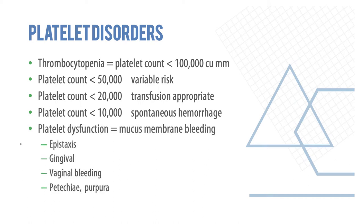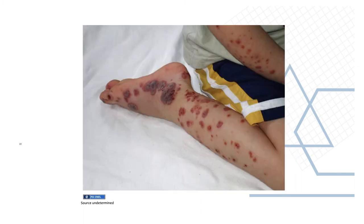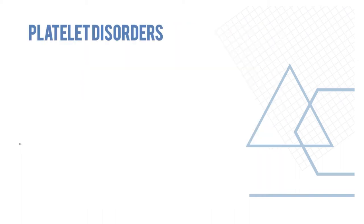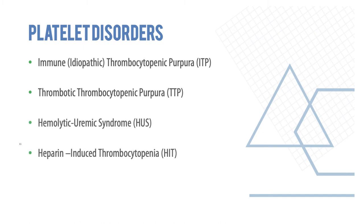Platelet dysfunction results in mucous membrane bleeding such as epistaxis, gingival bleeding, vaginal bleeding, or fecal bleeding. Platelet disorders can be of multiple types: ITP (idiopathic thrombocytopenic purpura), thrombotic thrombocytopenic purpura (TTP), hemolytic uremic syndrome (HUS), heparin-induced thrombocytopenia, and drug-induced inactivation of platelets.